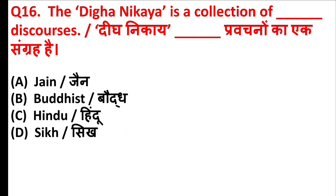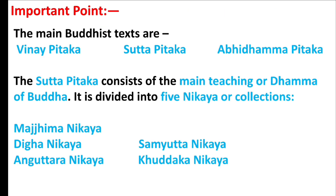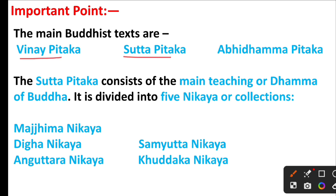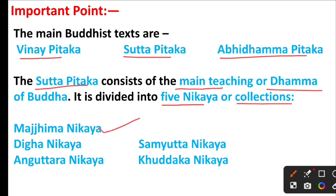The Digha Nikaya is a collection of what? The right answer is option B: Buddhist texts. Friends, the main Buddhist texts are Vinaya Pitaka, Sutta Pitaka, and Abhidhamma Pitaka. The Sutta Pitaka consists of the main teaching or Dhamma of Buddha. It is divided into five Nikayas or collections: Majjhima Nikaya, Digha Nikaya, Anguttara Nikaya, Samyutta Nikaya, and Khuddaka Nikaya.